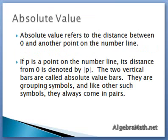Absolute value refers to the distance between zero and another point on a number line. If p is a point on a number line, its distance from zero is denoted by the absolute value of p. The two vertical bars are called absolute value bars. They are grouping symbols, and like other such symbols, they always come in pairs.